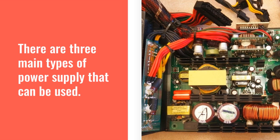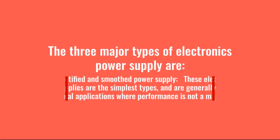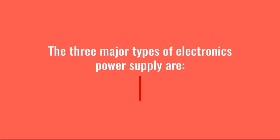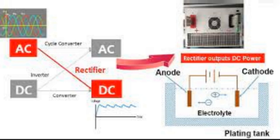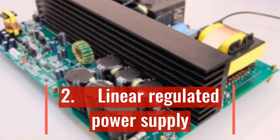There are three main types of power supply that can be used. Each has its own advantages and disadvantages, and as a result each is used under slightly different circumstances. The three major types are: 1. Rectified and smoothed power supply. These are the simplest types and are generally used for non-critical applications where performance is not a major issue. This type was widely used in thermionic valve or vacuum tube equipment, as it was not so easy to regulate supplies and often the requirements were not so critical.